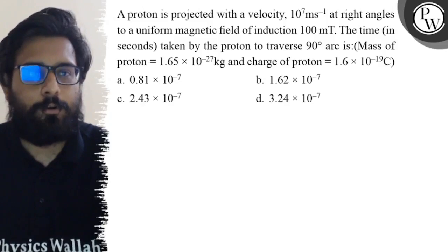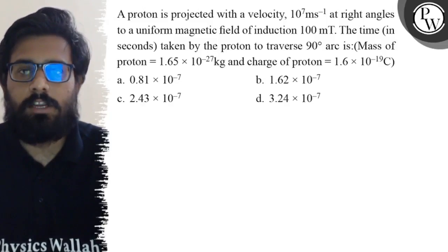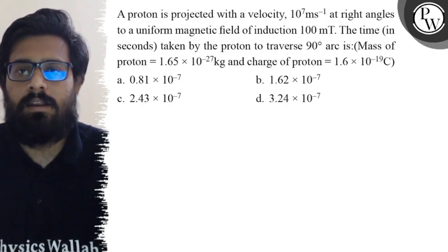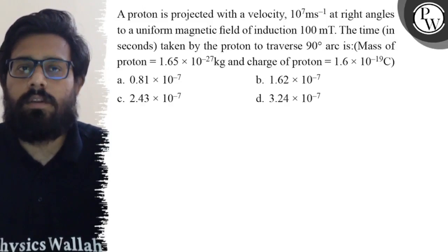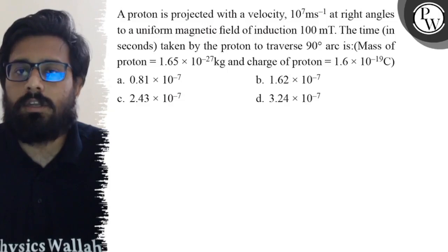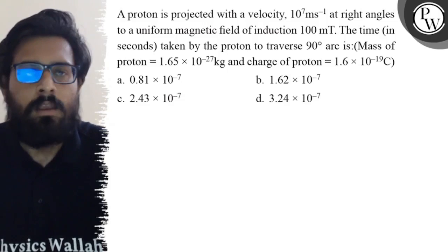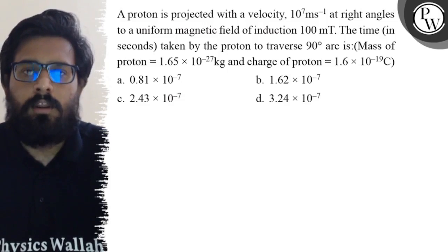Hello, so let's see the question. A proton is projected with a velocity of 10^7 meters per second at right angles to a uniform magnetic field of induction 100 microtesla. The time taken by the proton to